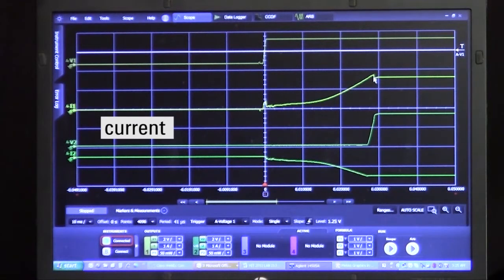Normally you would need a current shunt in order to measure current with an oscilloscope, but that measurement is built directly into the modules, hence simplifying the test setup.